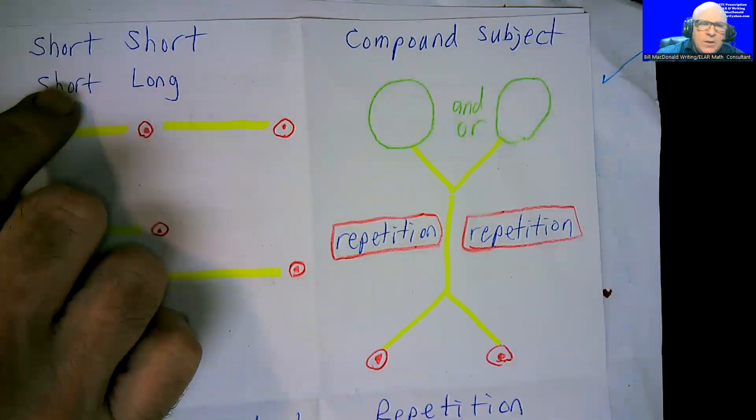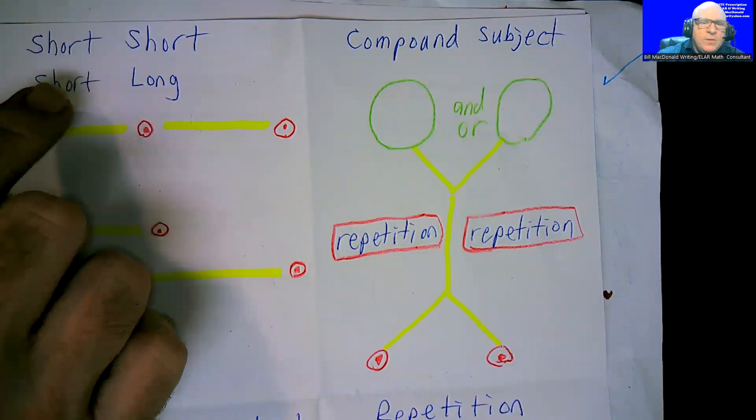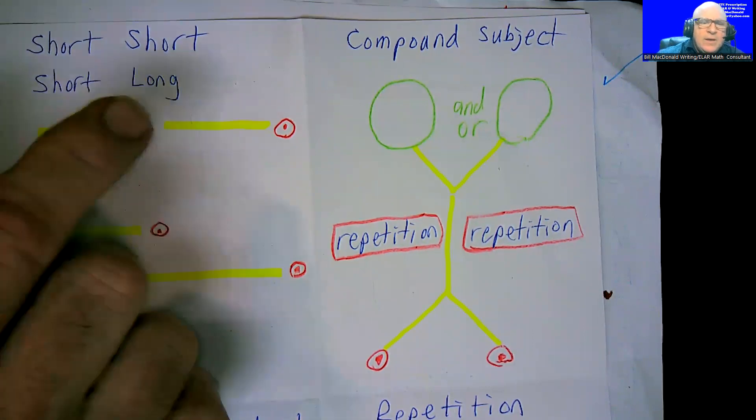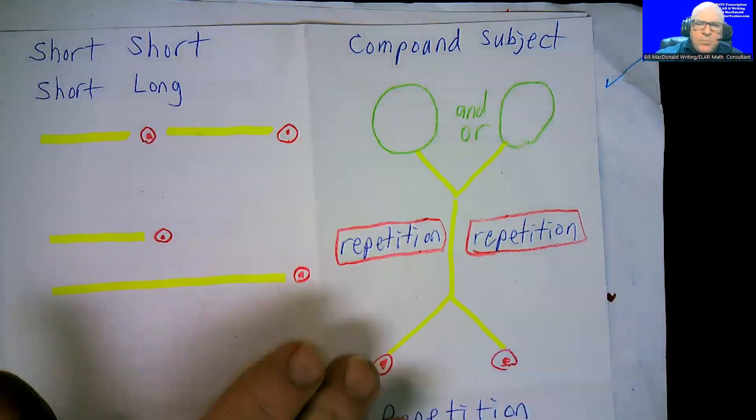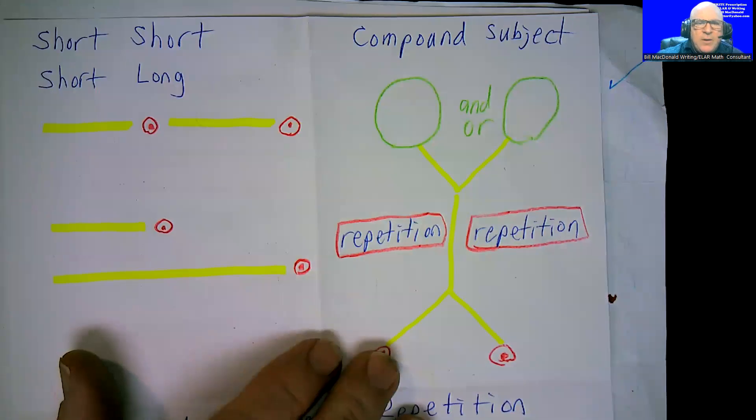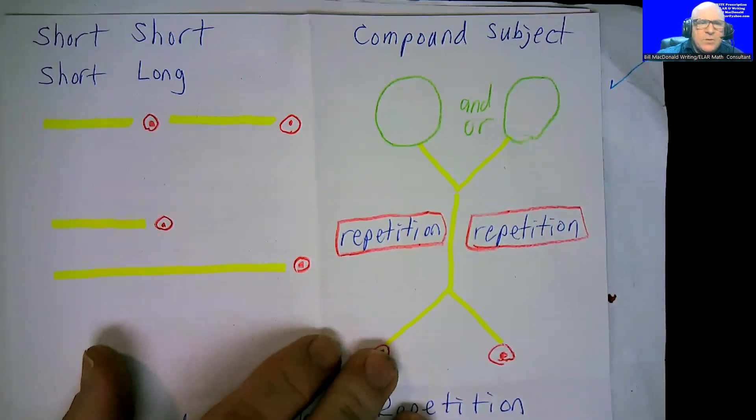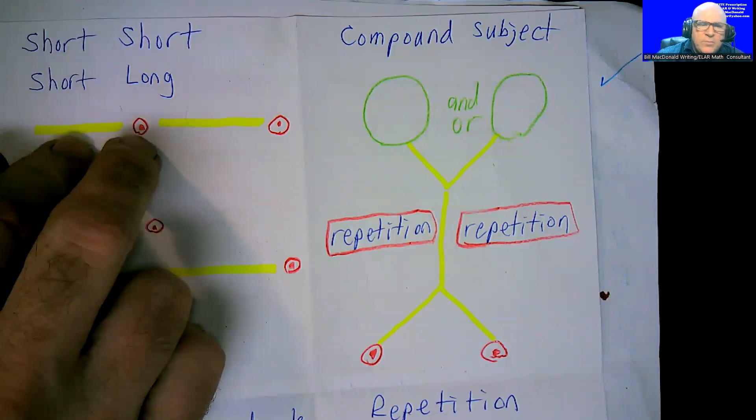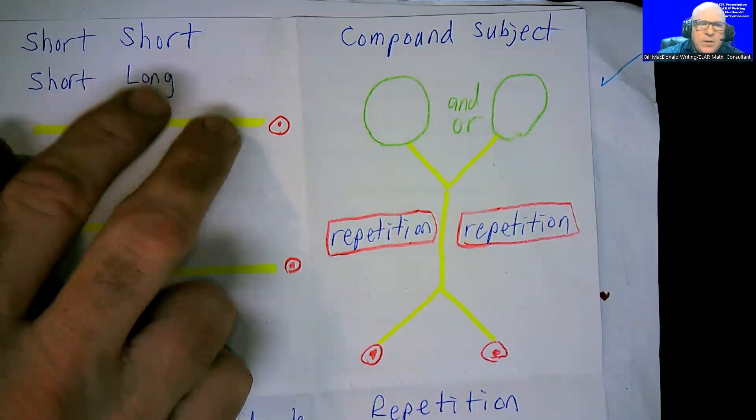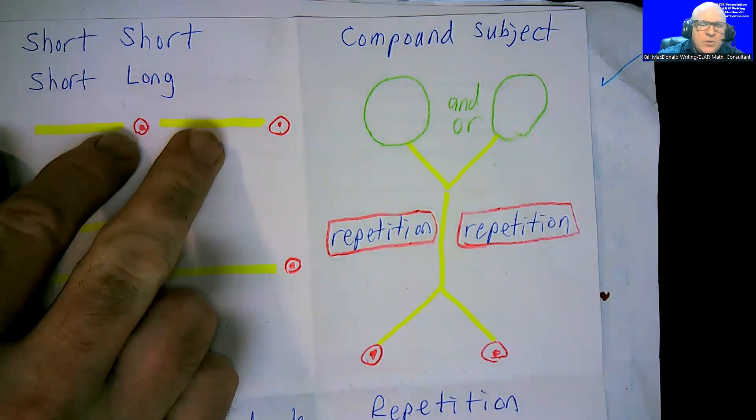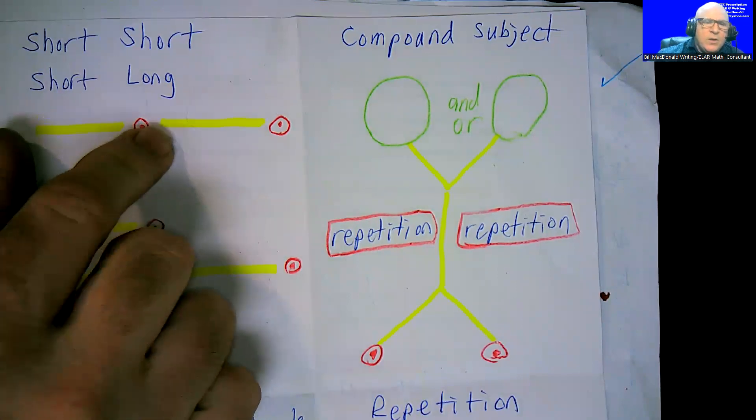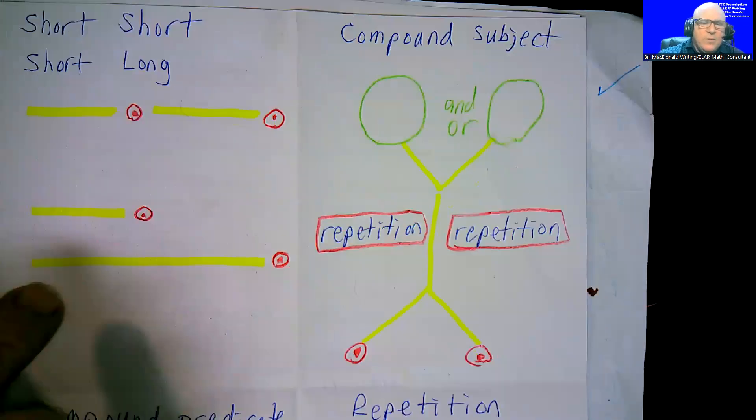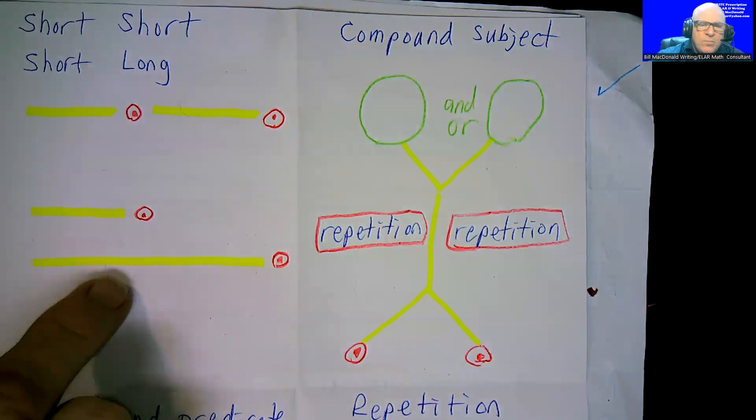Number one is when one of them is too short. So all the yellow that you see is the problem area that we'll talk about in the five examples. So let's say we have a short sentence period, short sentence period. Well, yes, you would want to combine two short sentences to make one longer one. Let's say that one of them is, only one is short, but one is long.